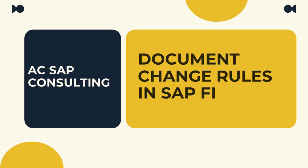Many times we post a document with some wrong details. After posting, we want to edit the document and change certain details. But sometimes we find that few fields are not editable when we go to transaction FB02 to edit an FI document. In this video we will understand what the document changing rules are, how to set them up, and how to make certain fields editable or non-editable.